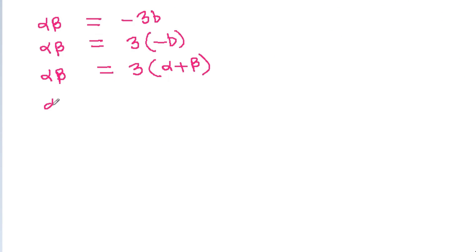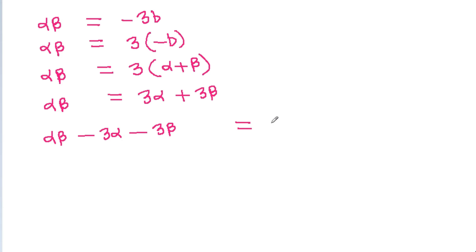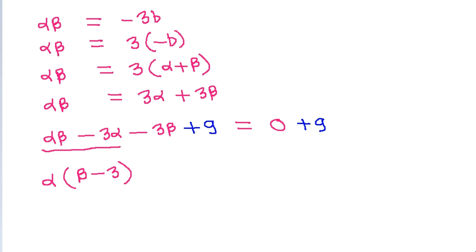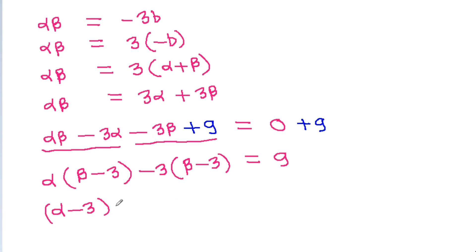So αβ=3α+3β, which gives αβ−3α−3β=0. Taking α common: α(β−3)−3β=0. Adding 9 to both sides allows us to factor: α(β−3)−3(β−3)=9, which gives (α−3)(β−3)=9.